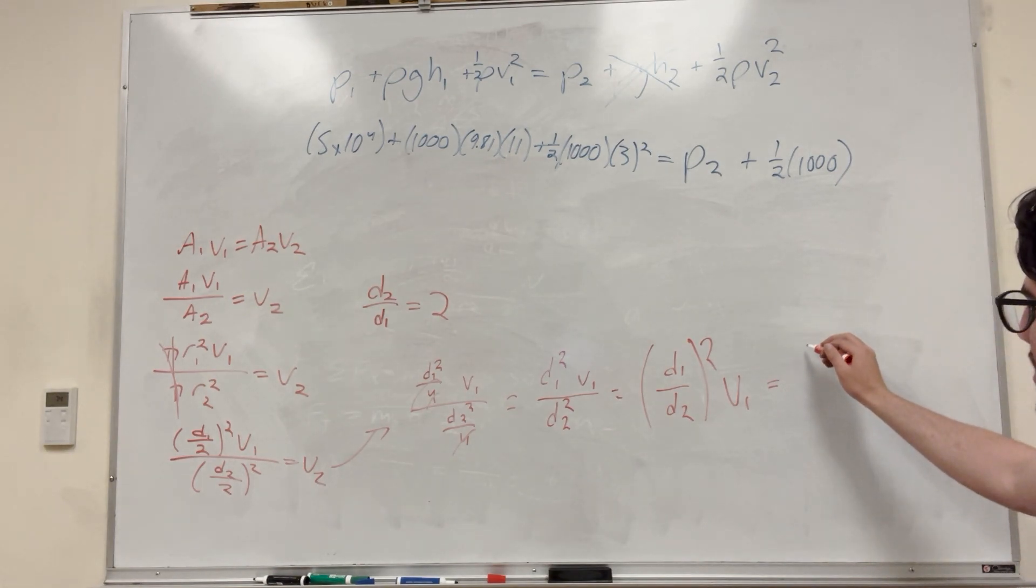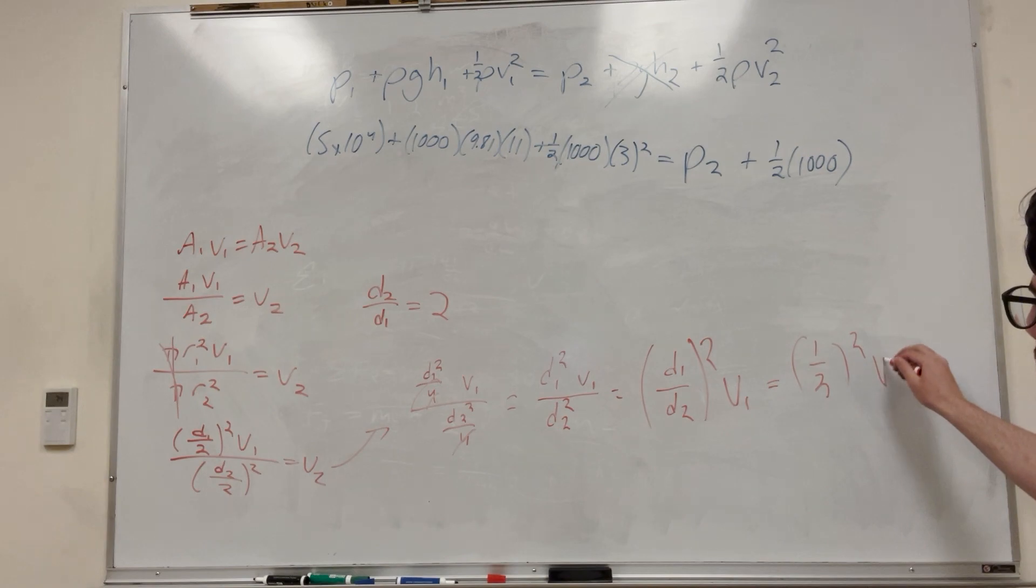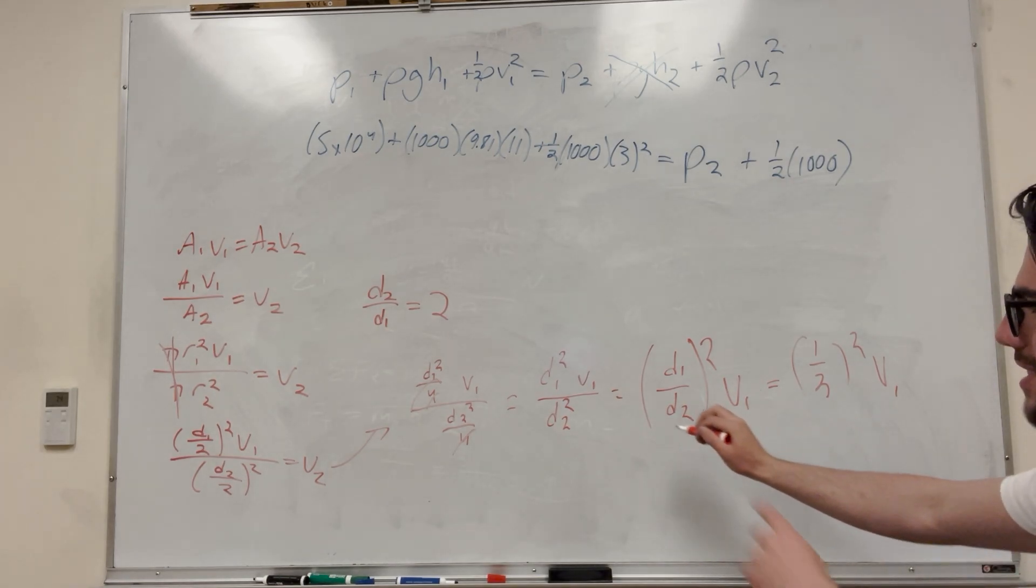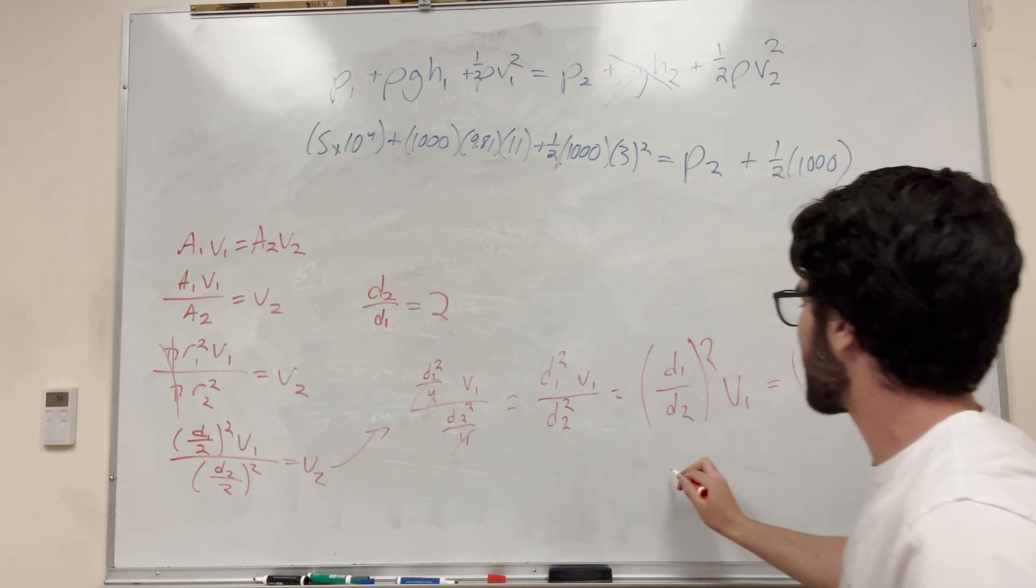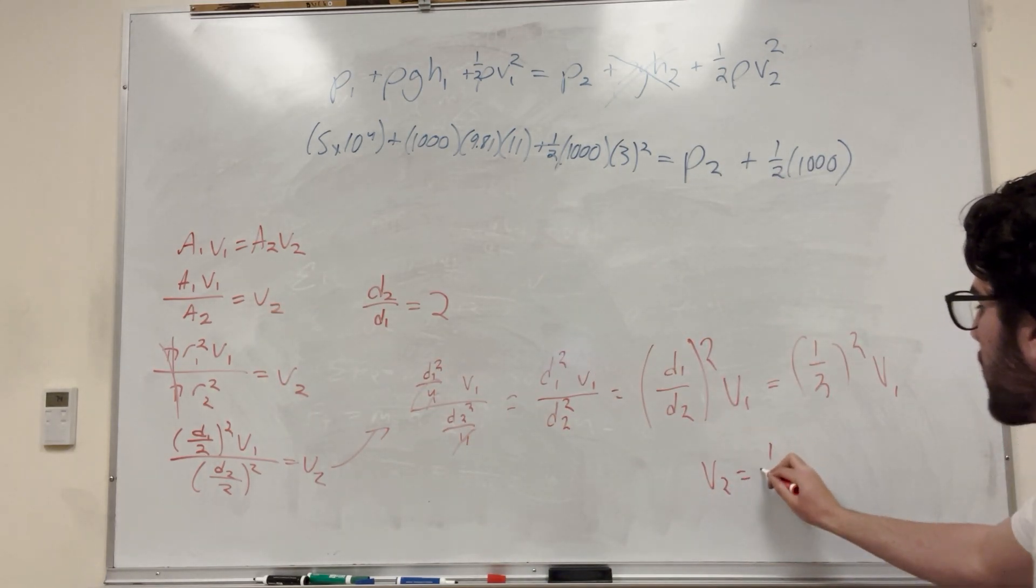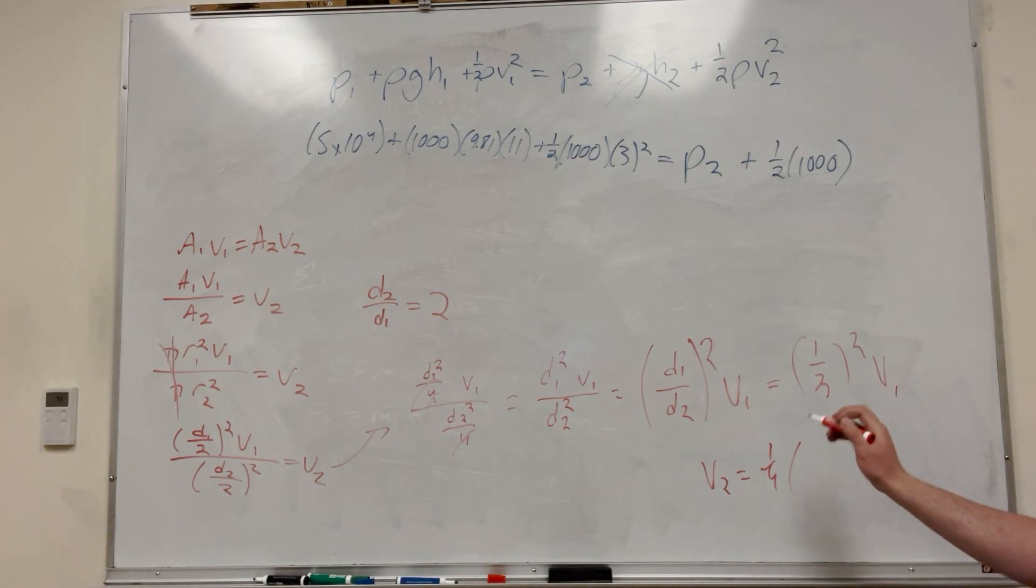Then that is equal to 2. So, it's going to be one half squared times the velocity of 1. There we go. We know that the velocity at 1 is 3. We can go all the way back. Basically, all this is to say that velocity of 2 is equal to one over 4 times the velocity of 1, which is 3. So, velocity of 2 is equal to 3 fourths.